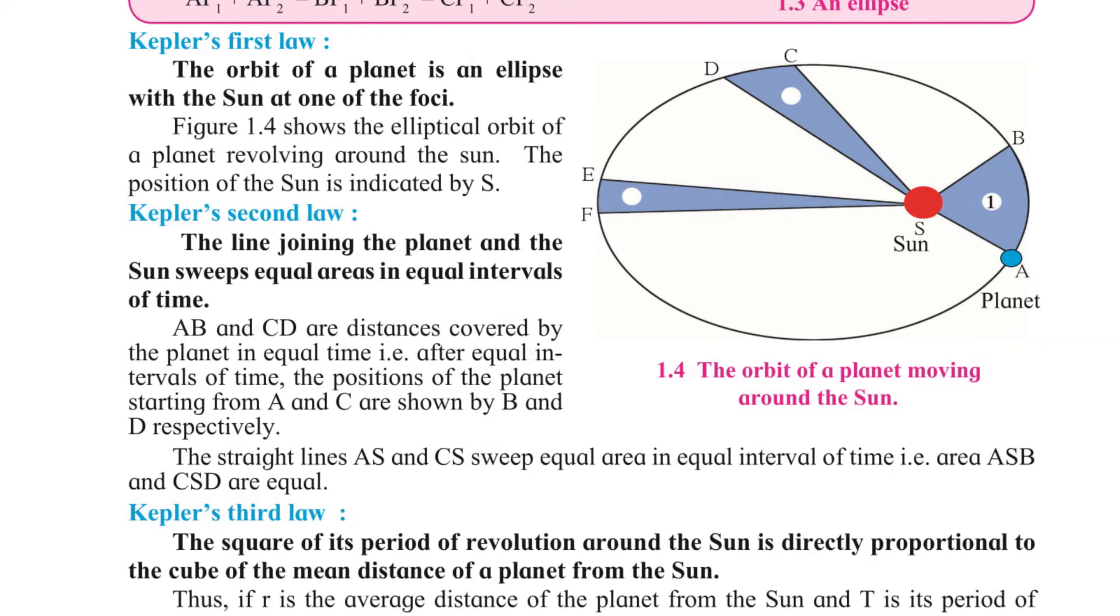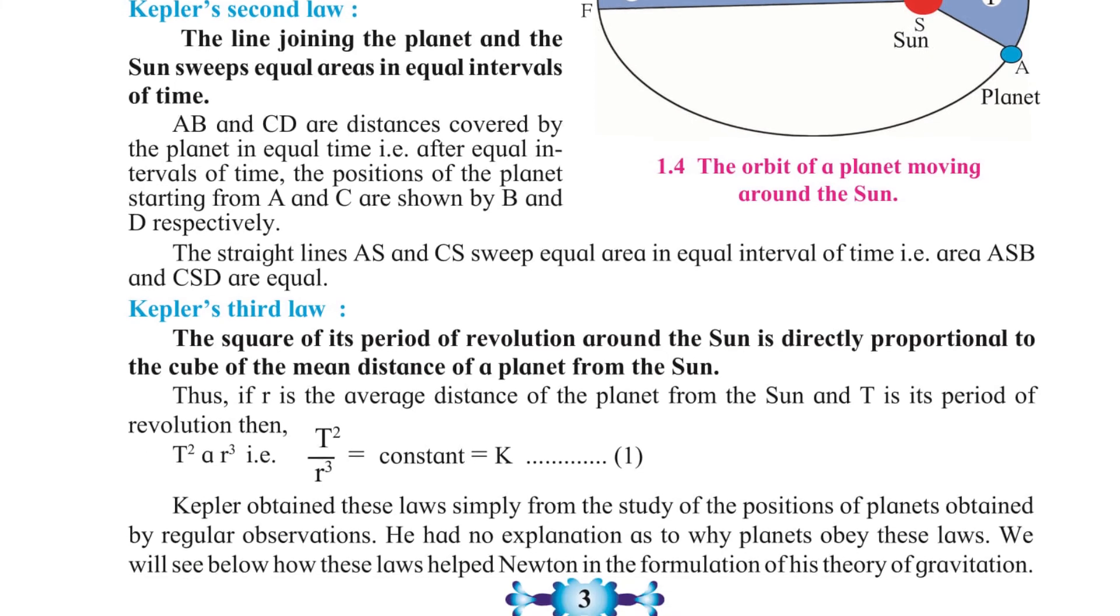Just have a look at the figure. A, B and C, D are distances covered by the planet in equal time. After equal intervals of time, the positions of the planet starting from A and C are shown by B and D respectively. The straight lines AS and CS sweep equal area in equal interval of time. That is, area ASB and CSD are equal.